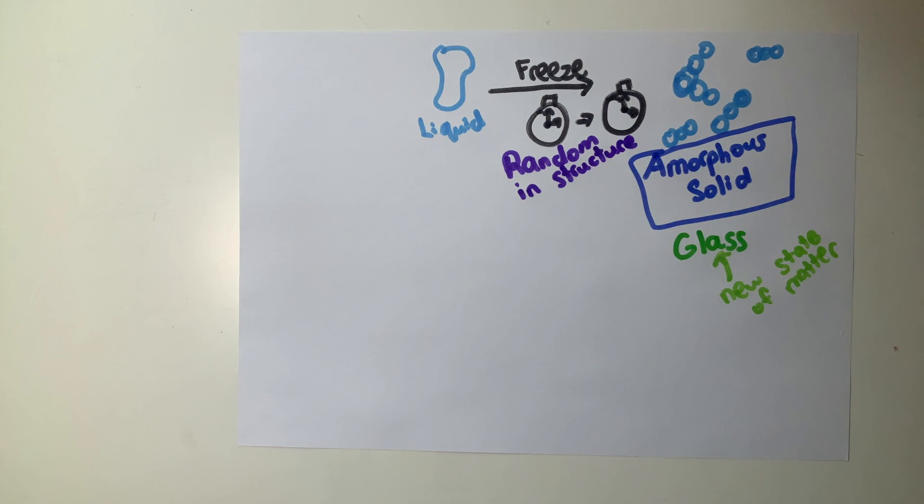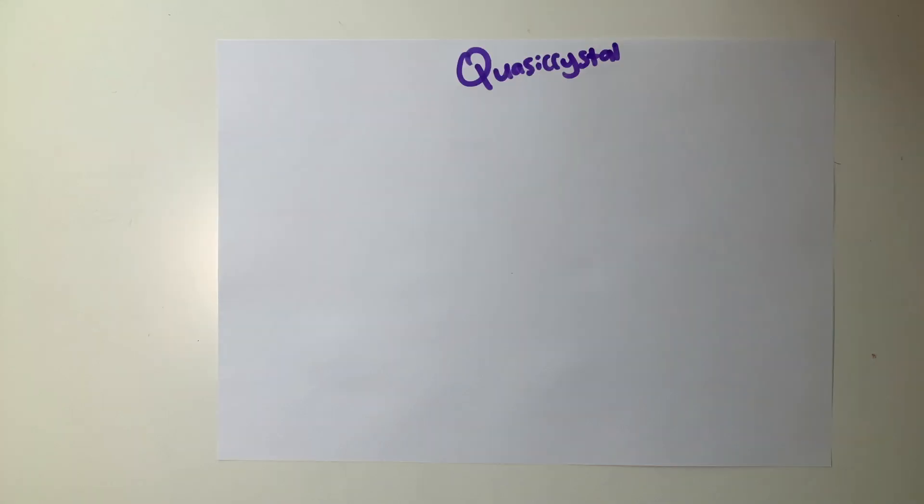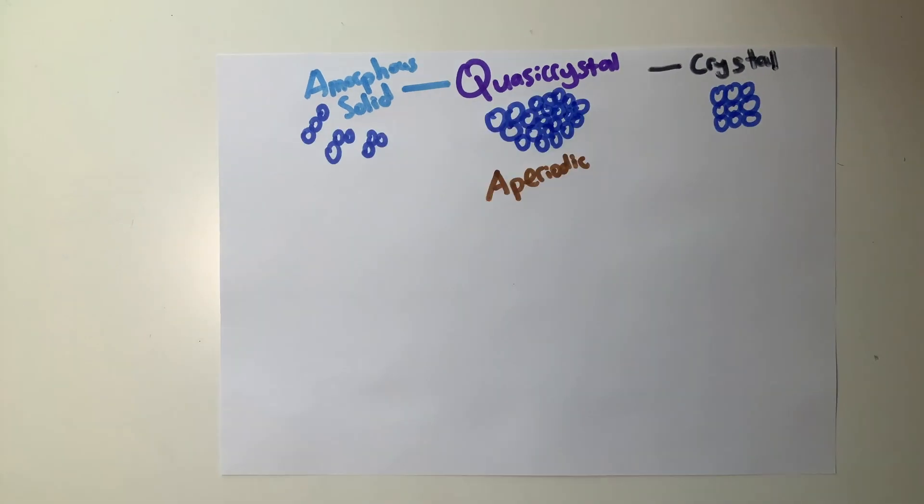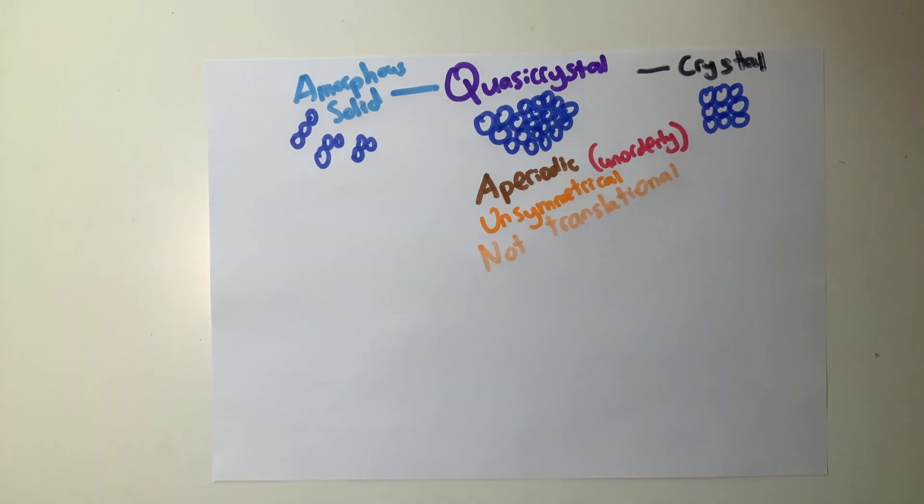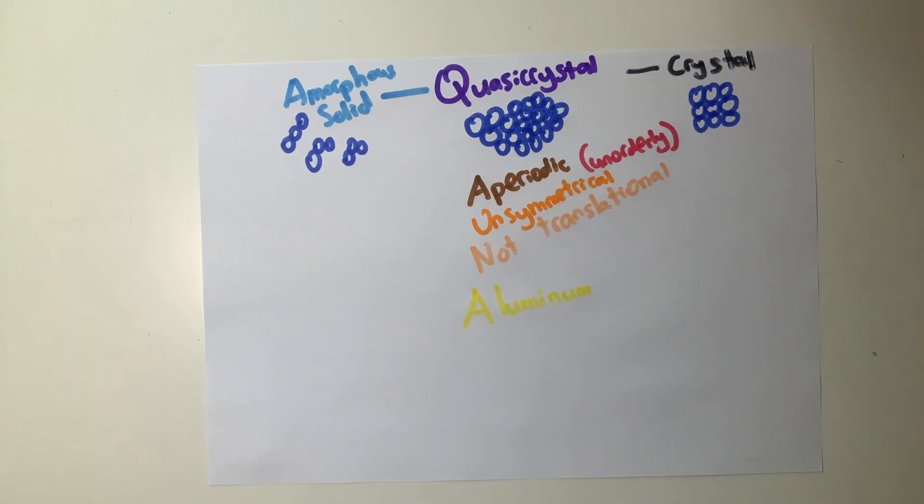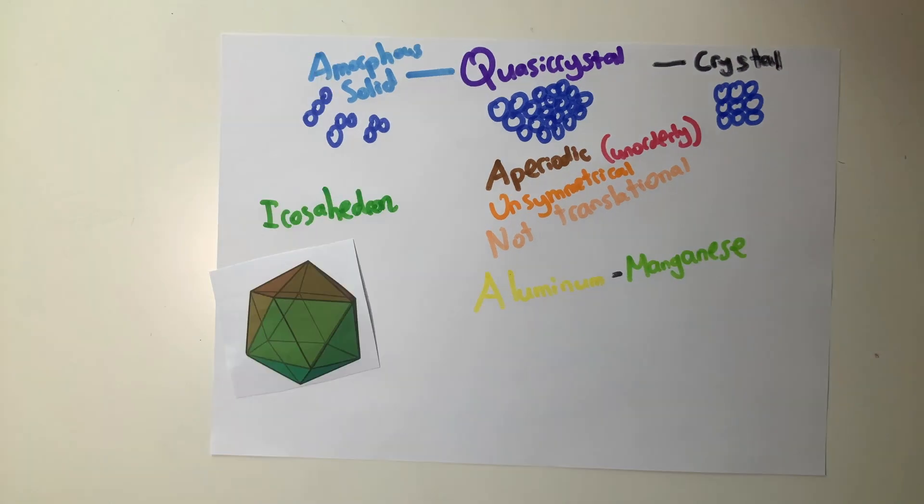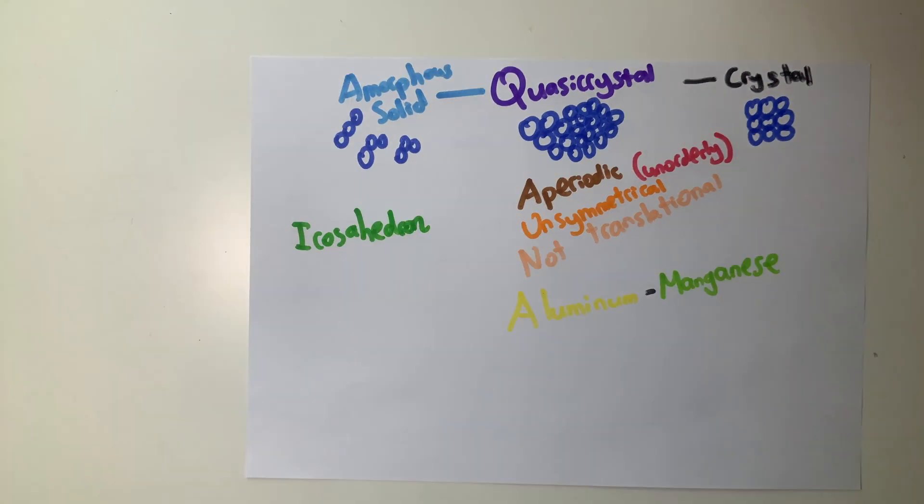Quasicrystals are solids that resemble an intermediate stage between crystals and amorphous solids. Their particles are ordered, like that in a crystal, yet the particles are not arranged in a periodic sequence. Instead, they are aperiodic and symmetrical and not translational. The first quasicrystal discovered was an aluminum-manganese alloy arranged in an icosahedron.